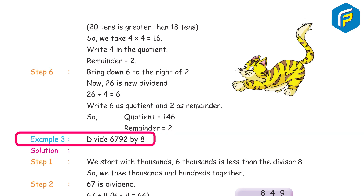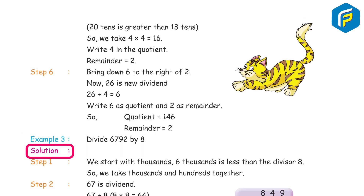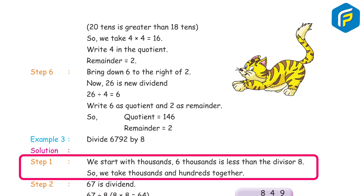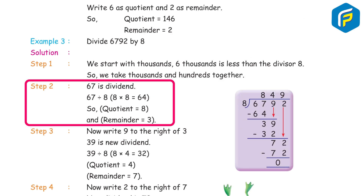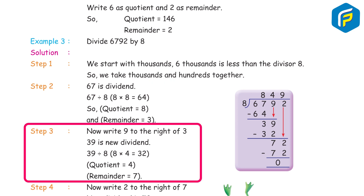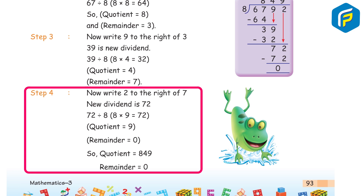Example 3: Divide 6792 by 8. Step 1: We start with thousands — 6 thousands is less than the divisor 8, so we take thousands and hundreds together. Step 2: 67 is the dividend; 67 ÷ 8 — 8 × 8 = 64, so quotient digit is 8, remainder 3. Step 3: Bring down 9 to the right of 3; new dividend is 39. 39 ÷ 8 — 8 × 4 = 32, quotient digit 4, remainder 7. Step 4: Bring down 2 to the right of 7; new dividend is 72. 72 ÷ 8 — 8 × 9 = 72, quotient digit 9, remainder 0. So, quotient 849, remainder 0.